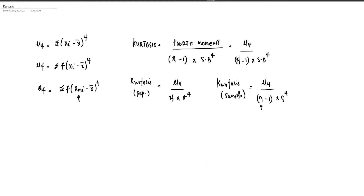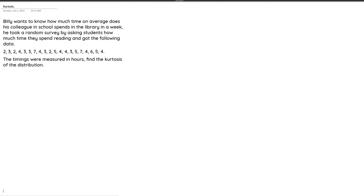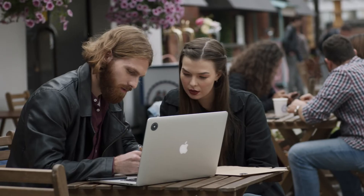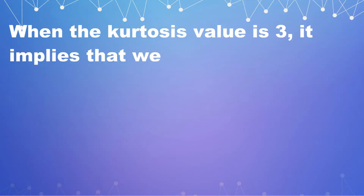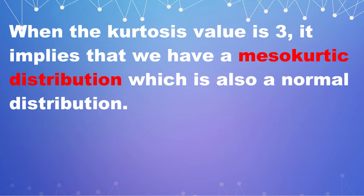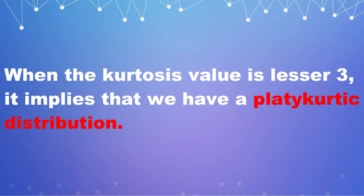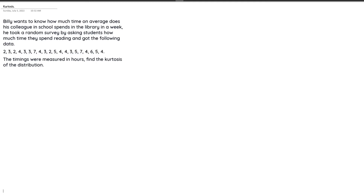Now that we've explained the details of the kurtosis formula, it's time to solve a question. Billy wants to know how much time on average his colleagues in school spend in a library per week. He took a random survey asking students how much time they spend reading and collected a data set, measured in hours. Before solving, note: a kurtosis value equal to three means a mesokurtic (normal) distribution; greater than three means leptokurtic; less than three means platykurtic.